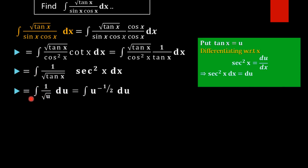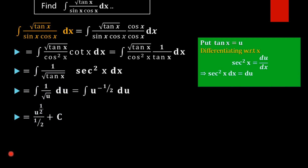After substitution we get the integral of 1 by root u du, which is the integral of u raised to minus half du. Applying the power rule: u raised to minus half plus 1 divided by minus half plus 1, that is u raised to half divided by half.